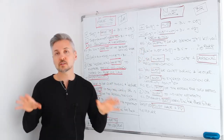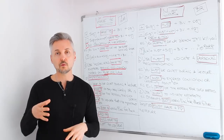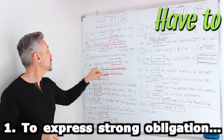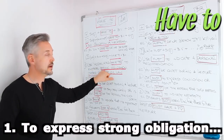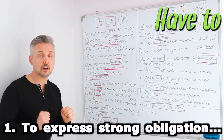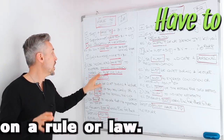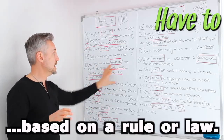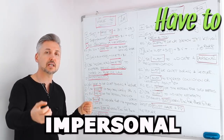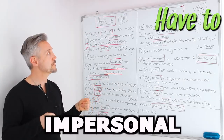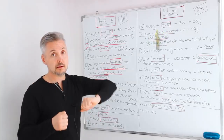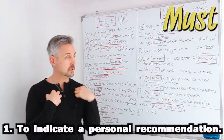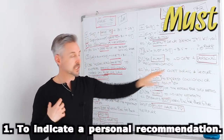Now, the most important thing is when and how we use these two. The first rule: use the modal verb 'have to' to express strong obligation. This strong obligation is based on a rule or law, and 'have to' is impersonal — somebody else tells you to do something. Instead, 'must' is used to indicate a personal recommendation.